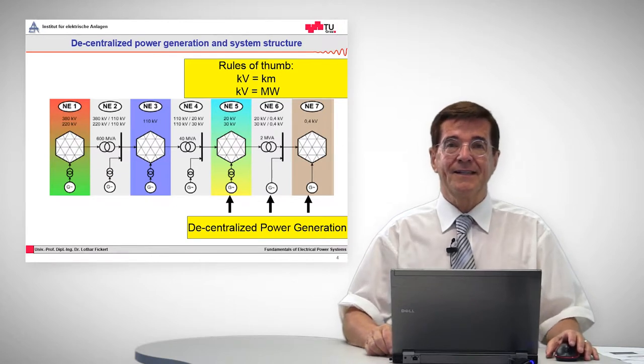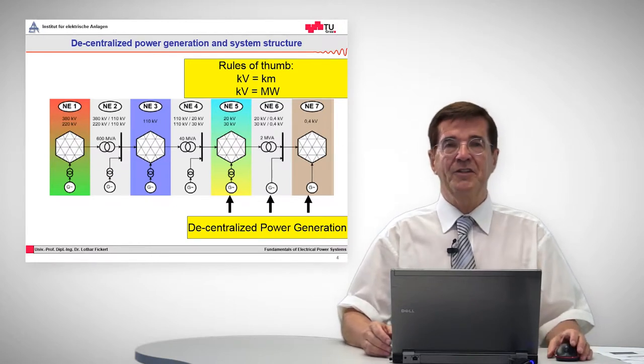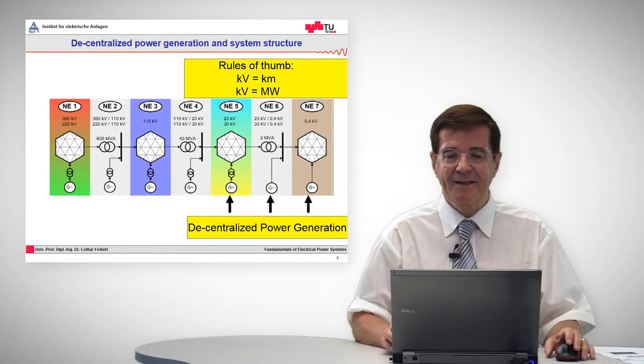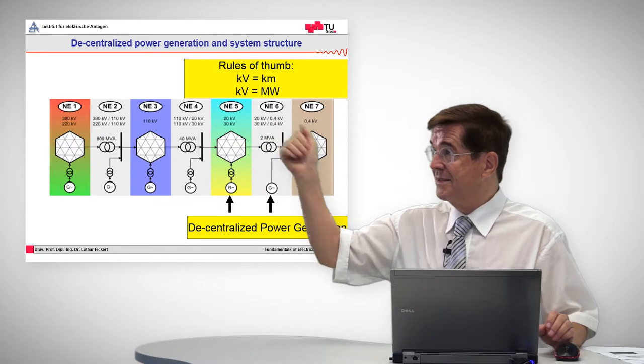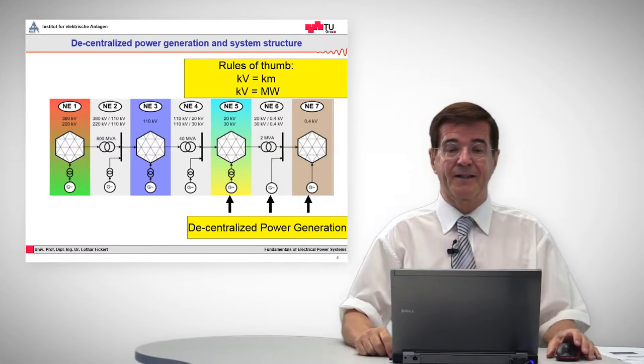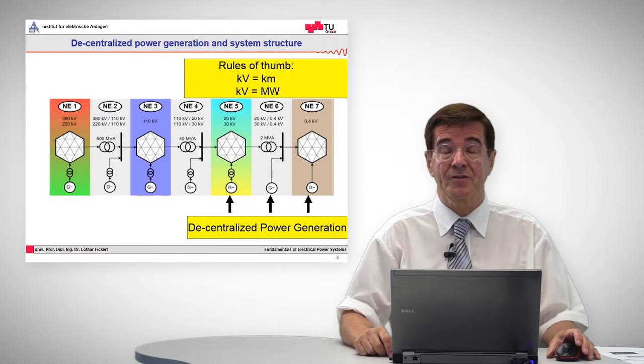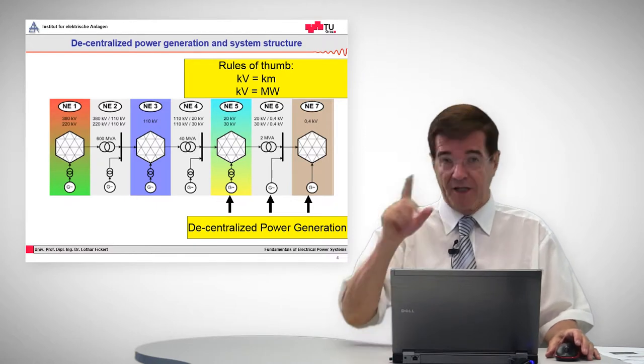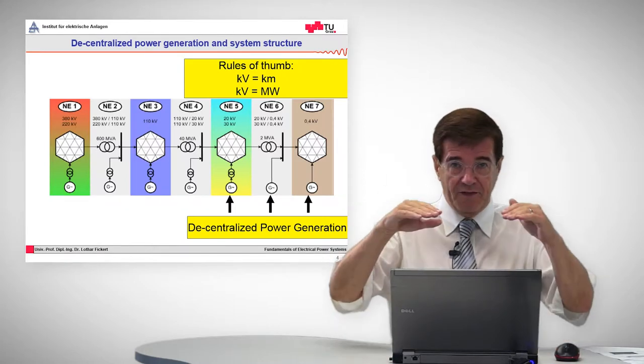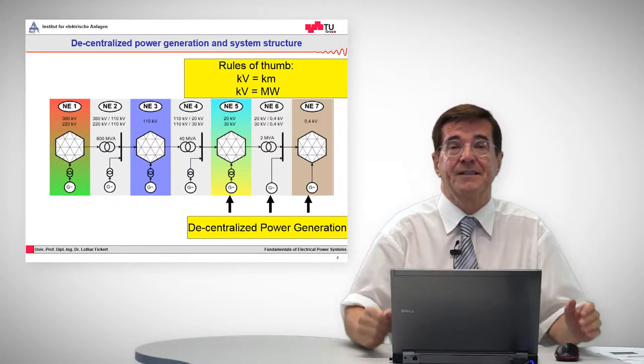Since the output is relatively small compared to the single units, we must keep in mind that according to the rule of thumbs, kilovolts corresponds to kilometers and kilovolts also corresponds to MVA, the output power of the generating units. This means we have low voltages and short distances accordingly.